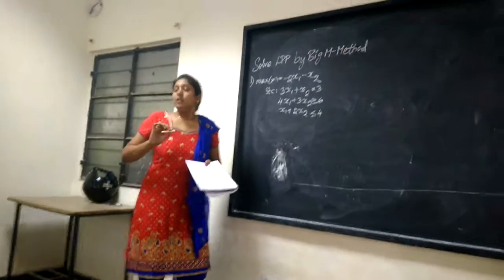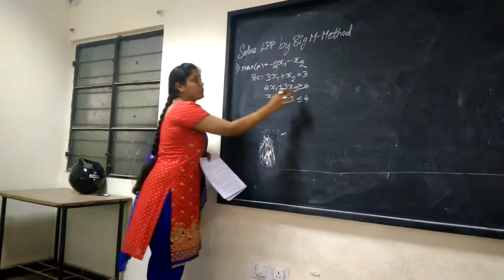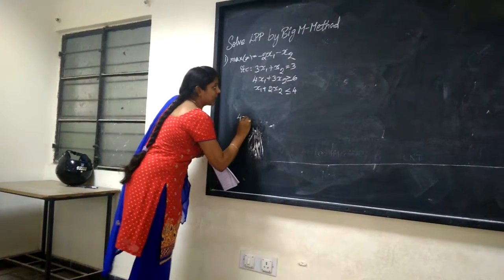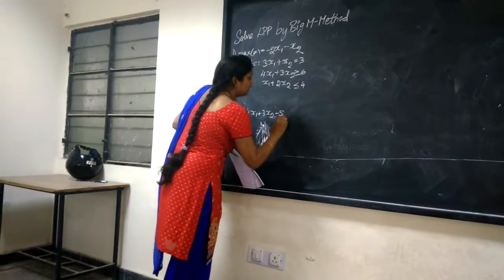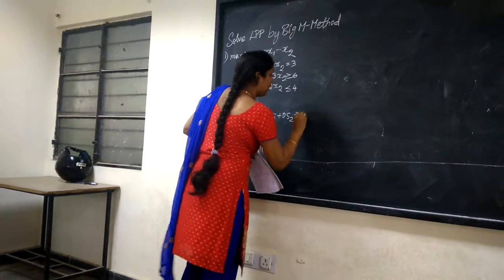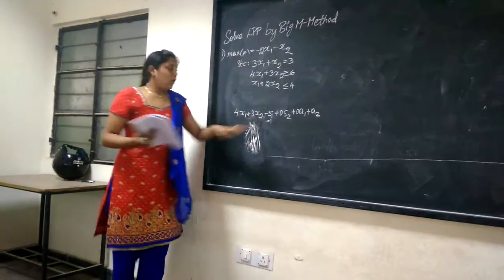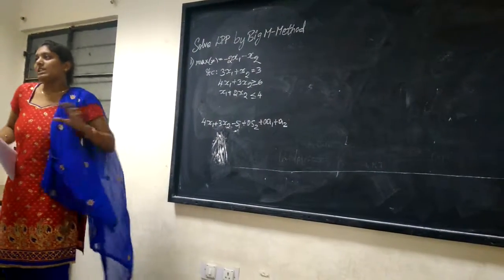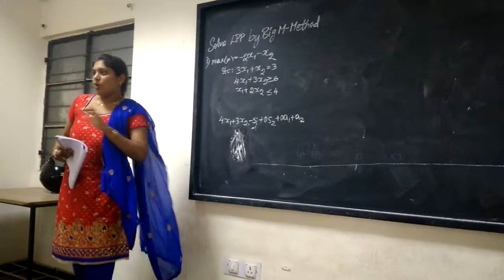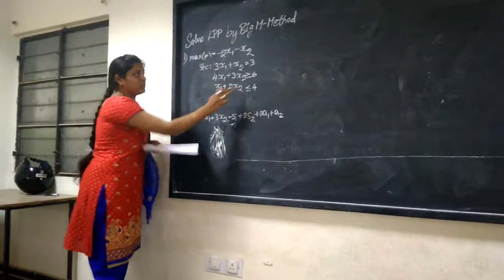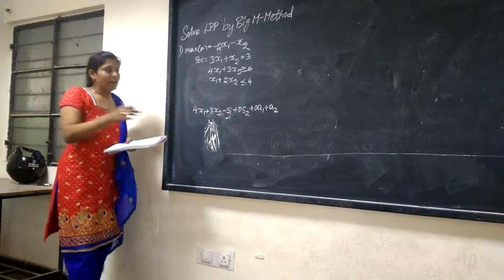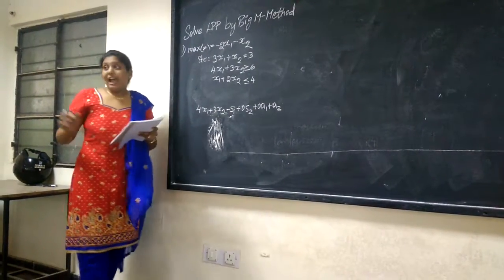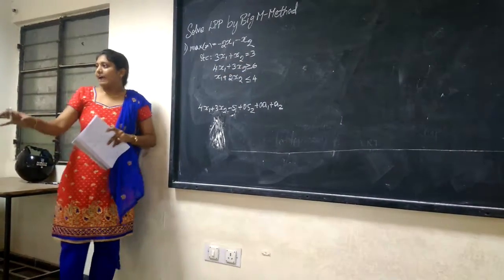Slack variables are not needed in the big M method — we only need surplus variables. Here we have a greater than or equal to sign. So this equation becomes: 4x1 + 3x2 − s1 + 0s2 + 0a1 + a2. All variables together should form a basic matrix form such as the identity matrix. For an equal to sign in the equation, we just add the artificial variable.